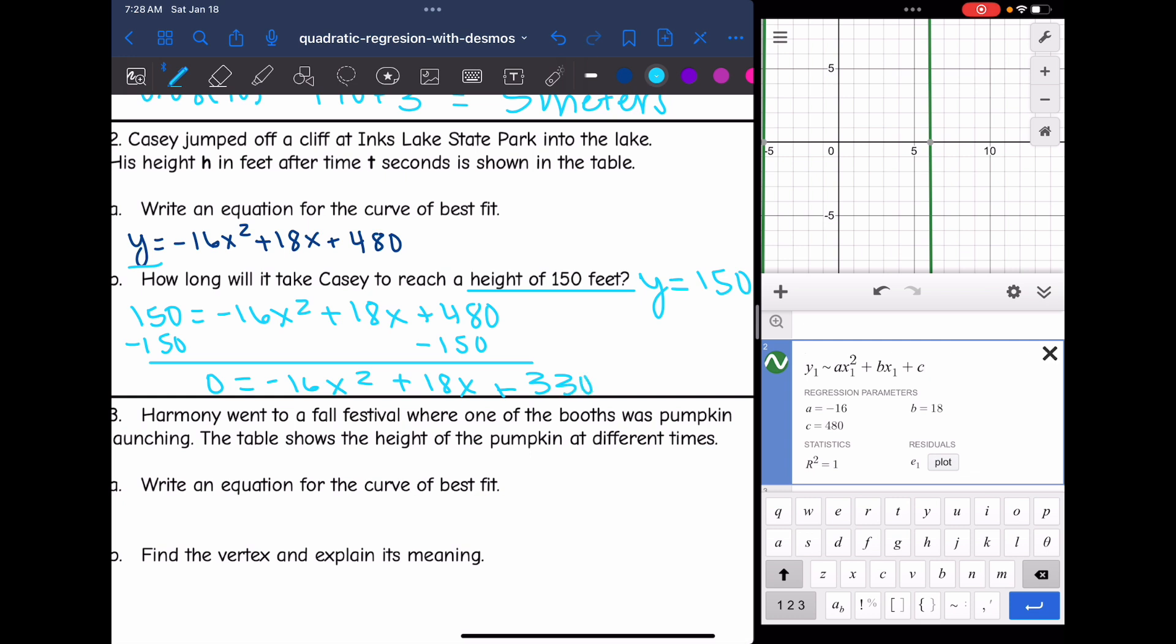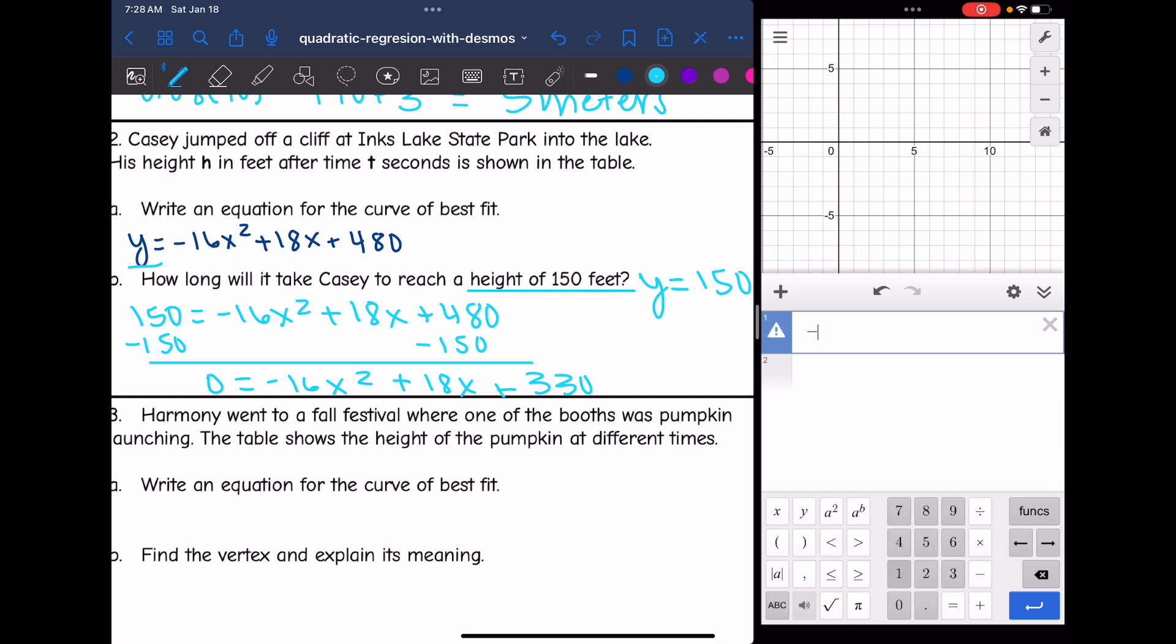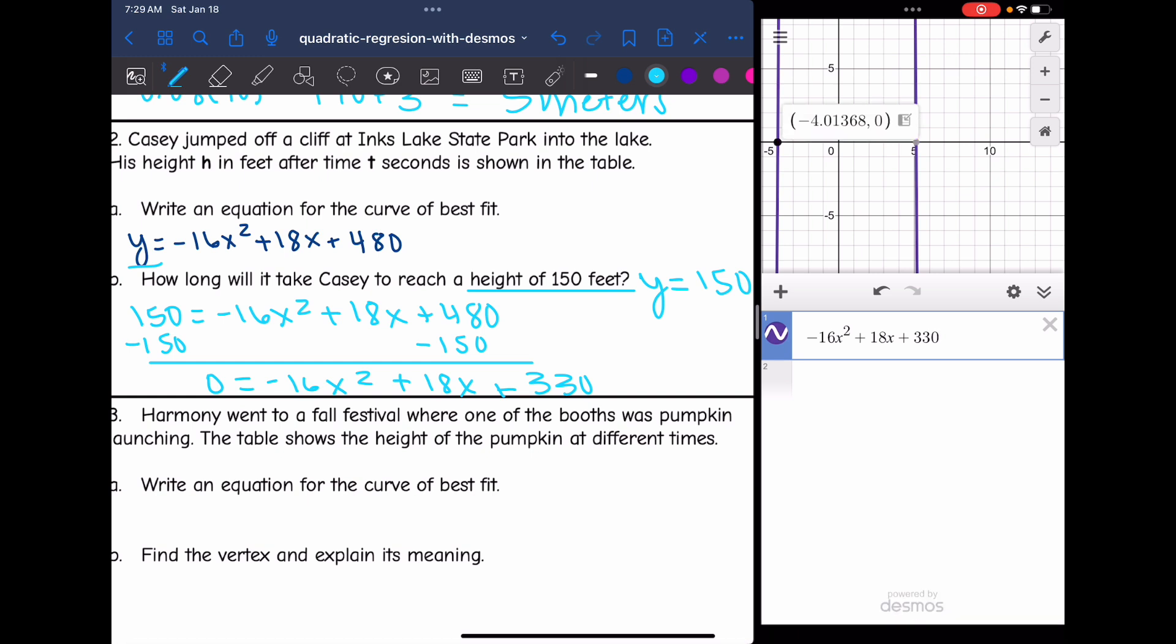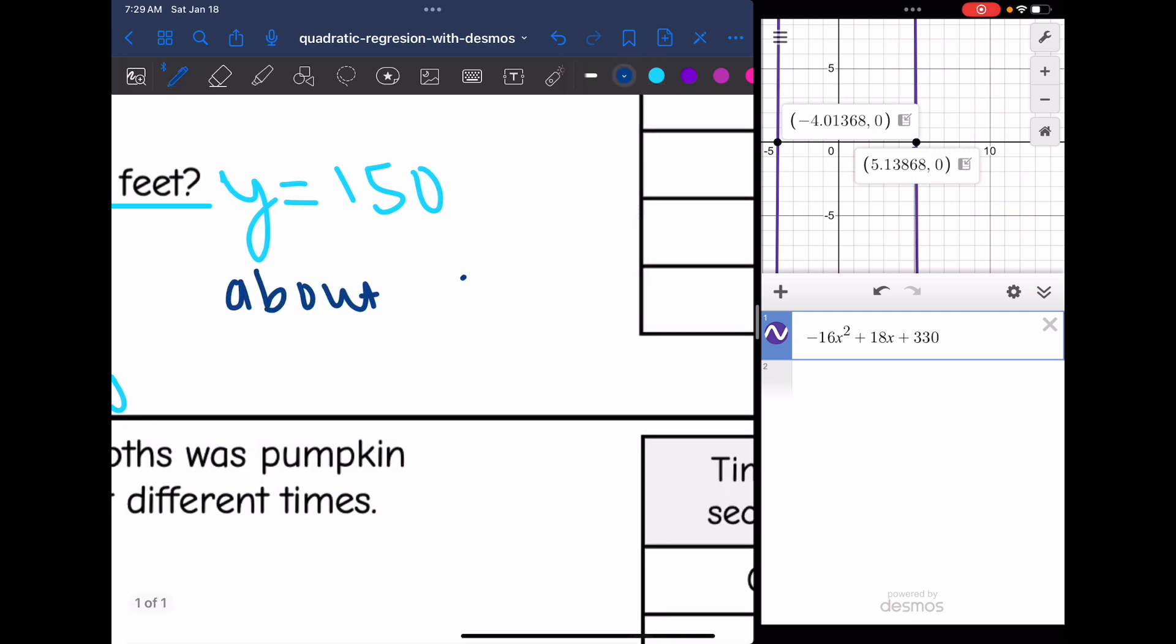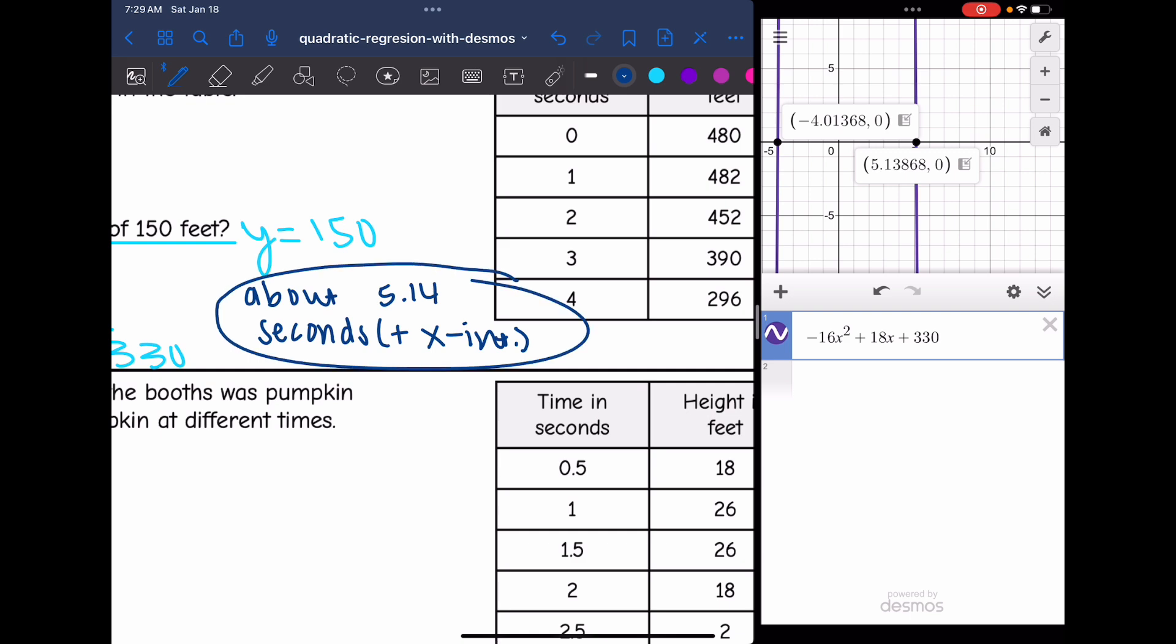We can type this into Desmos and look for the x-intercepts because those are the solutions to my quadratic equation. So I get negative 16x squared plus 18x plus 330. Okay, and I can see I have two x-intercepts. This one's negative, so I'm going to throw that out because we're not going to have negative seconds that we're dealing with. So this must be my solution here, about 5.138 seconds. So I'm going to round that to about 5.14 seconds. And the way we got that, that was our positive x-intercept.